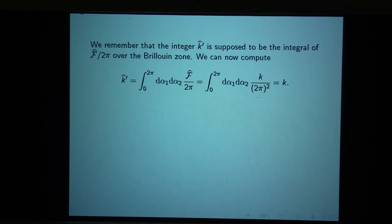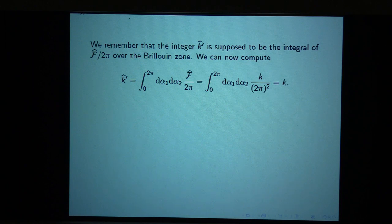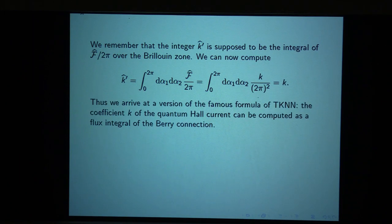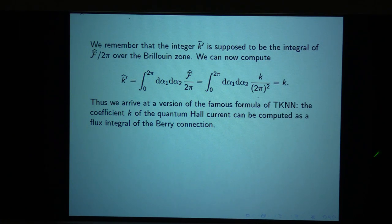We've learned that the macroscopic Berry flux integral, k-prime hat, is equal to the Chern-Simons coefficient. So we get a version of the famous TKNN formula. The coefficient k of the quantum Hall current, which in our presentation is the Chern-Simons coefficient, can be computed as a flux integral of the Berry connection.